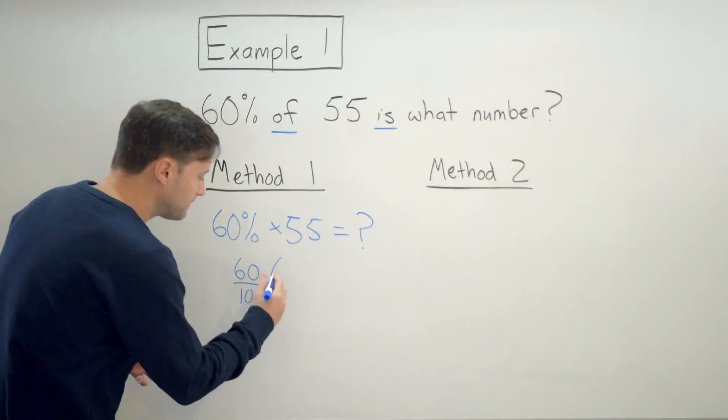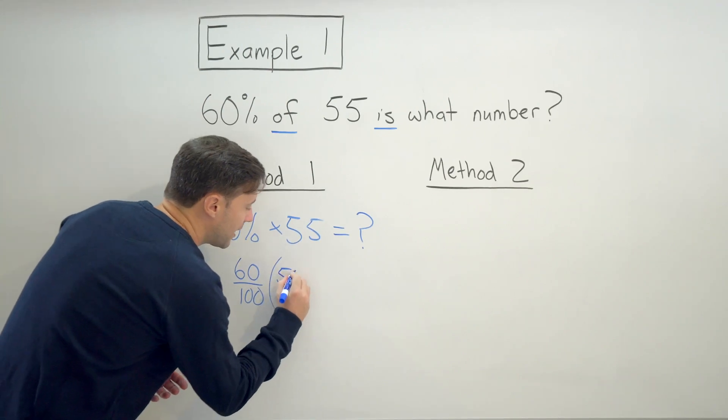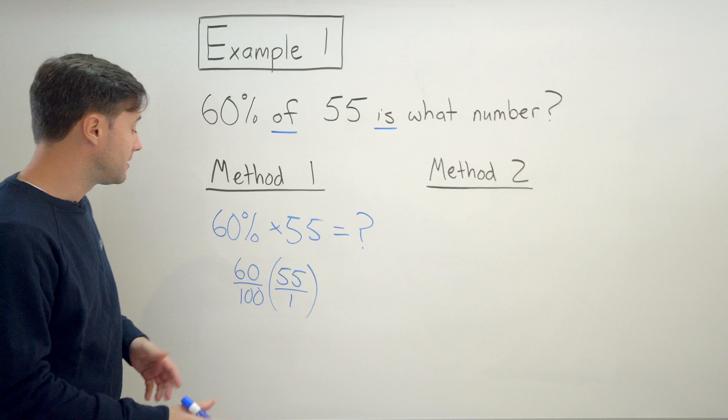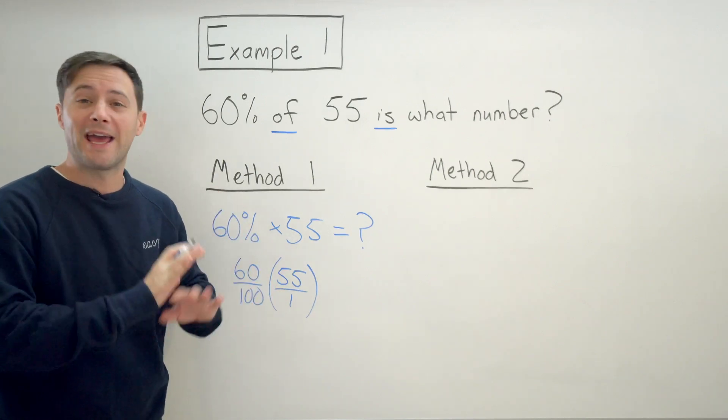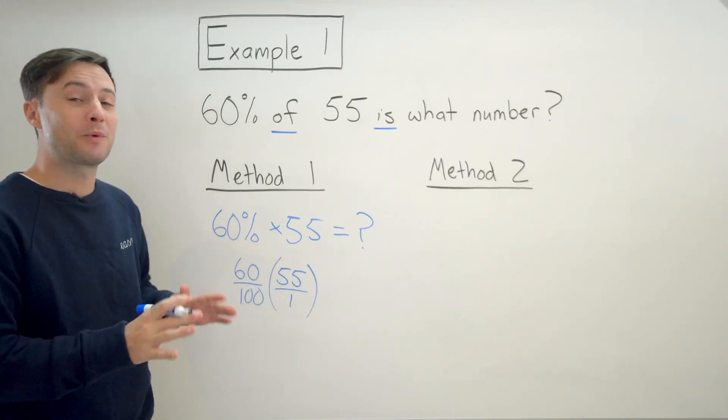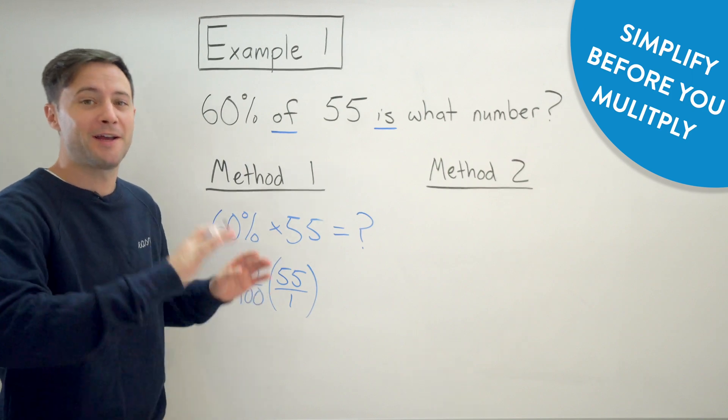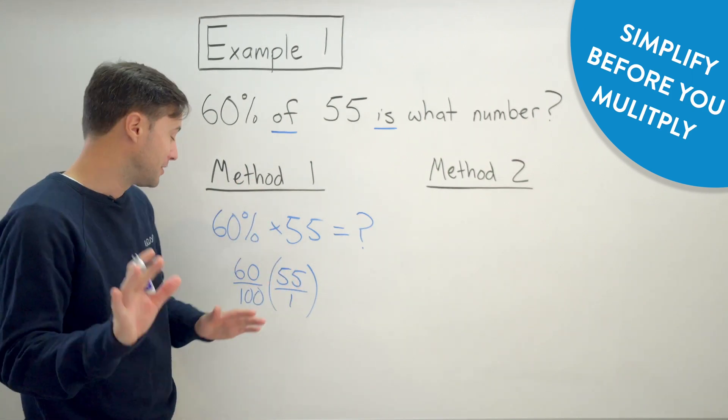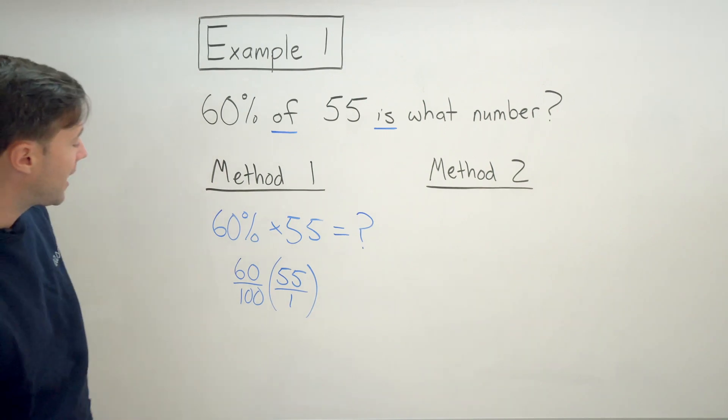So I can write this as 60 over 100 times 55. And I want to write that 55 like a fraction so I don't kind of get confused. So I'm going to write that as 55 over 1. And now I just need to do the multiplication. But before I multiply, anytime I have fractions, I always want to try to simplify before I multiply. It's going to save you a ton of work, believe me.